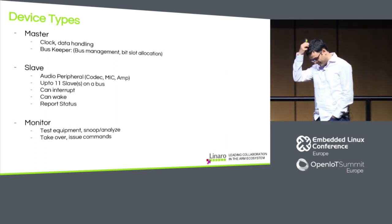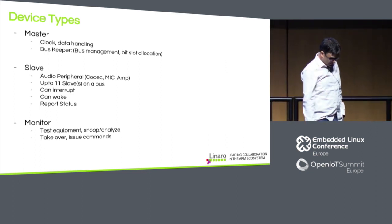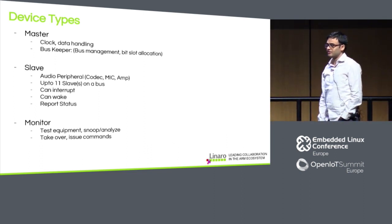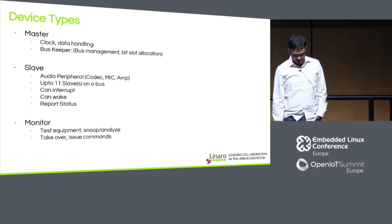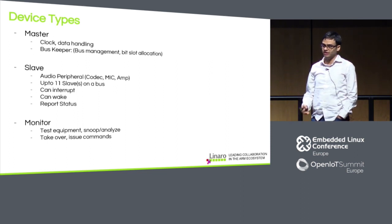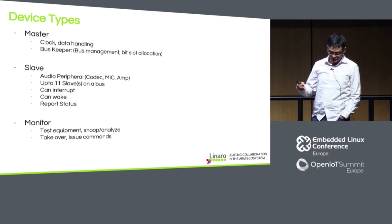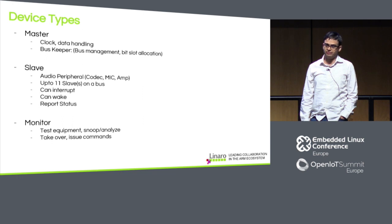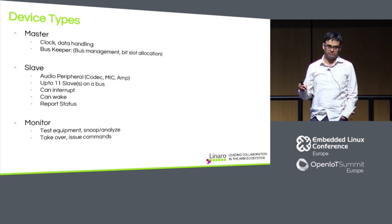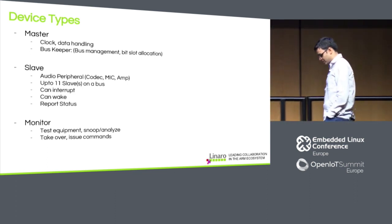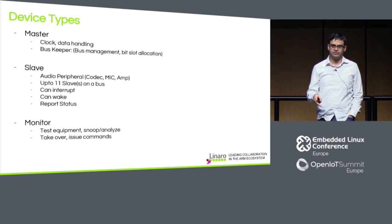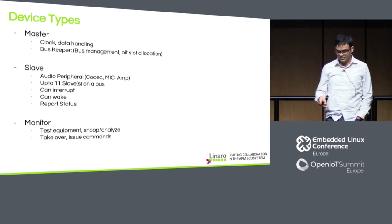Let's look at the actual device types. A master is a device that drives the clock and does data handling. There is also a concept called bus keeper, which assigns who should be driving a bit slot. A bit slot refers to each edge of the clock in the dual data rate bus. The master does bus management and assigns owners of each bit slot — who is allowed to drive and who is not.